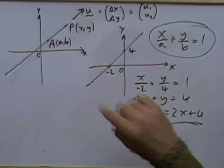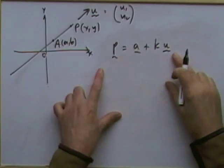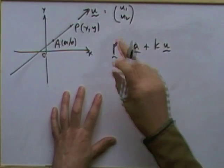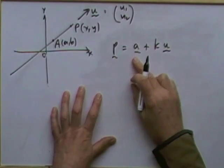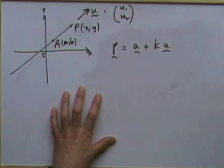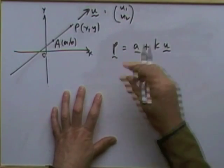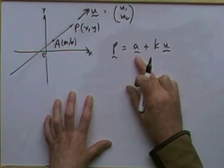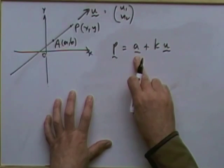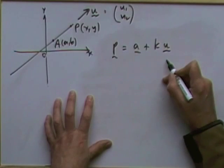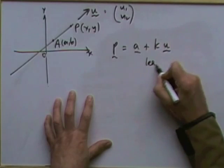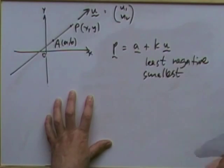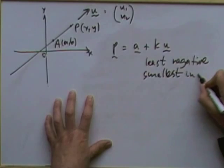Back to the vector forms. The issue with the vector equation is that the point A can be any point on the line, and u can be any vector in the line's direction — so they're not unique. The best you can do is keep numbers small, avoid fractions, minimise negatives, and use the smallest integer values for the direction vector components: least negative, smallest integer.